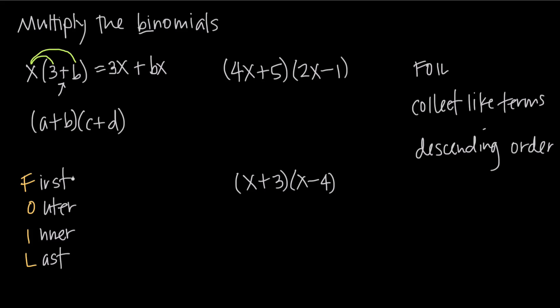FOIL stands for first, outer, inner, last. So it tells us to multiply our first terms together, so each of the first terms in the binomials, so a and c are the first terms, we have to multiply those together. Then the outer terms, so that's going to be the ones on the outside, which are a and d, so we have to multiply these two together. Then we have to multiply the inner terms, the ones on the inside of this whole thing, that's going to be b and c. And then the last term, so the last term in each binomial, b and d in this case. So those are going to be the four multiplication steps that we're going to do.